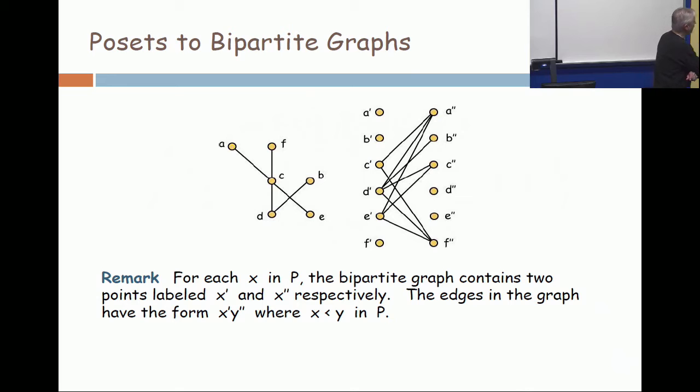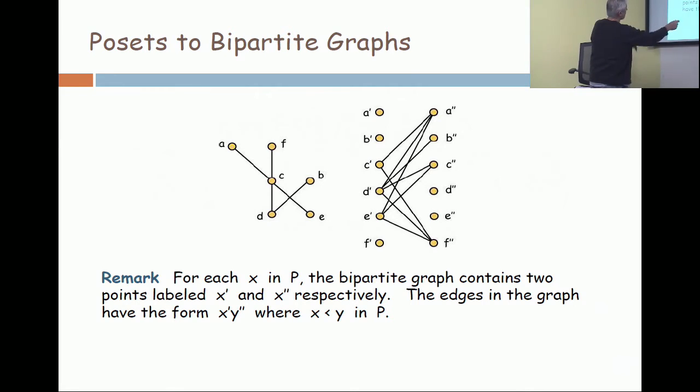For example, do you see the edge e prime to f double prime, coming down here, the one which looks physically the lowest in the picture? Why is that edge present?